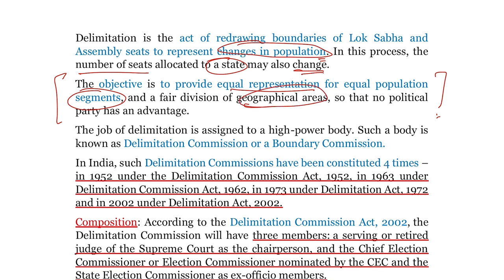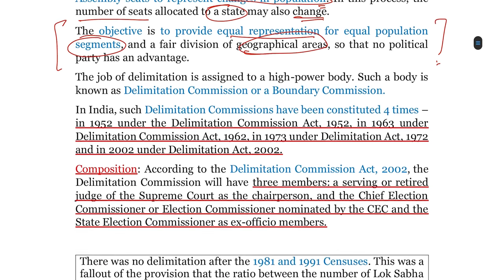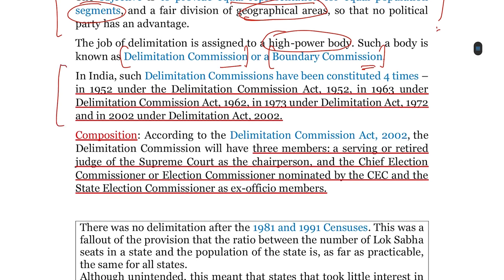ताकि किसी भी political party को किसी भी प्रकार का advantage ना मिले। यह पूरी process Delimitation Commission को assign होती है, जिसे boundary commission के नाम से भी जानते हैं। India के context में, Delimitation Commission की स्थापना चार बार हुई है। जब भी इसकी process पूरी हो जाती है, यह dissolve कर दी जाती है और फिर दुबारा किसी act के आधार पर इसकी स्थापना की जाती है।